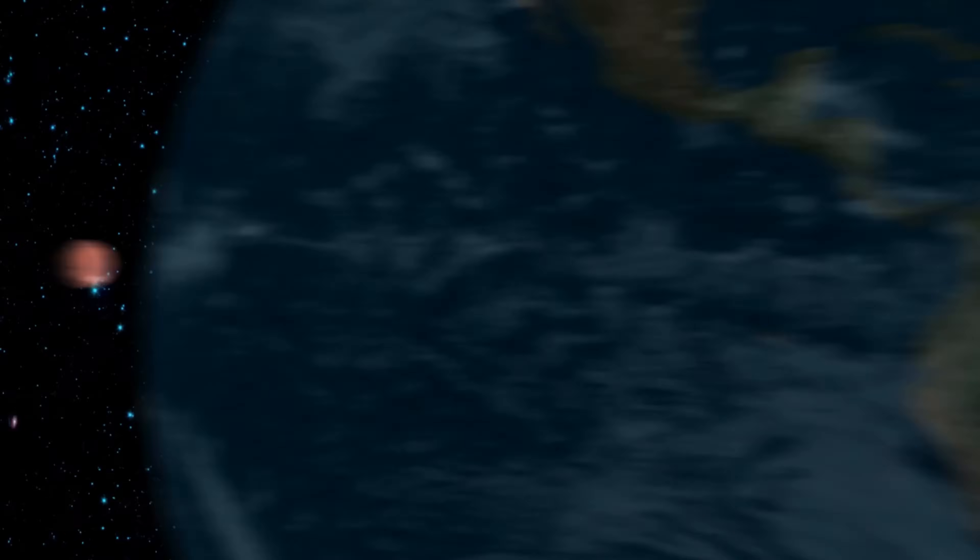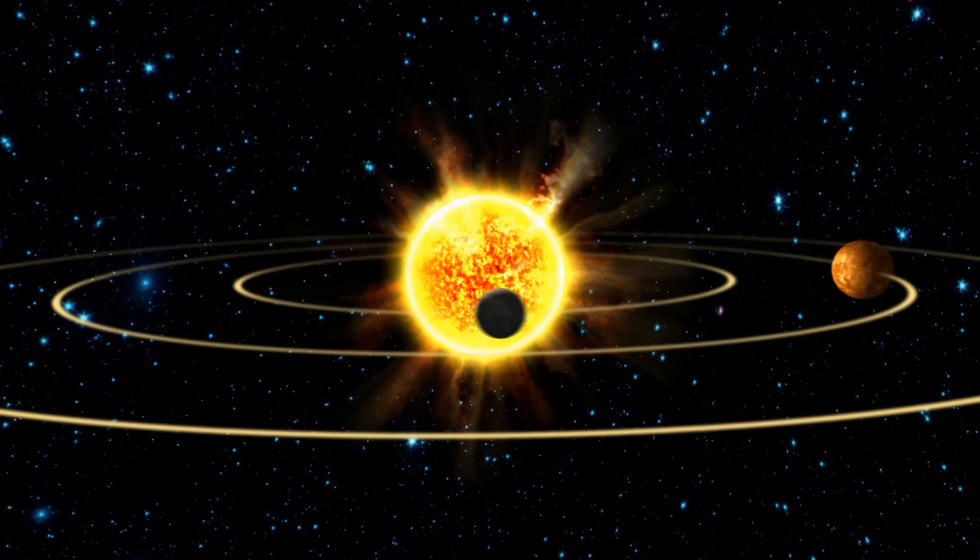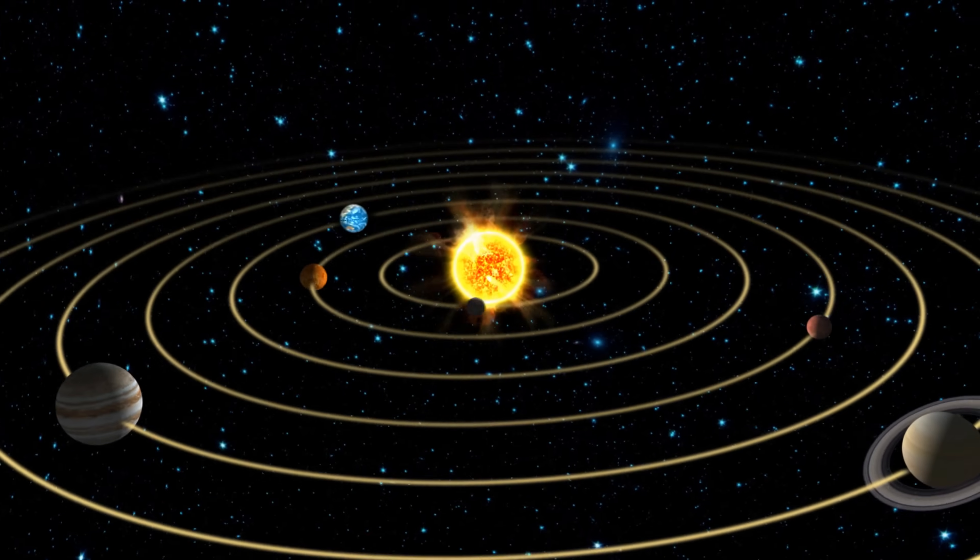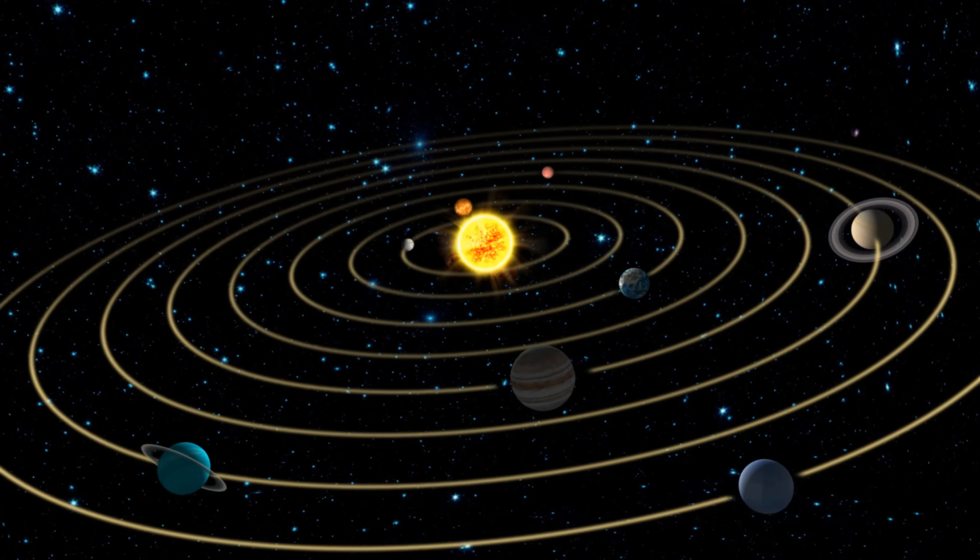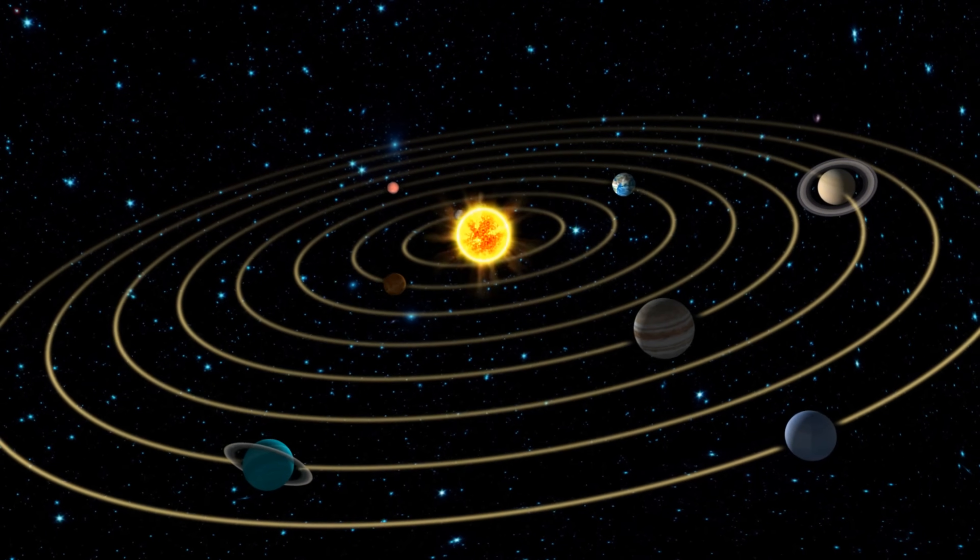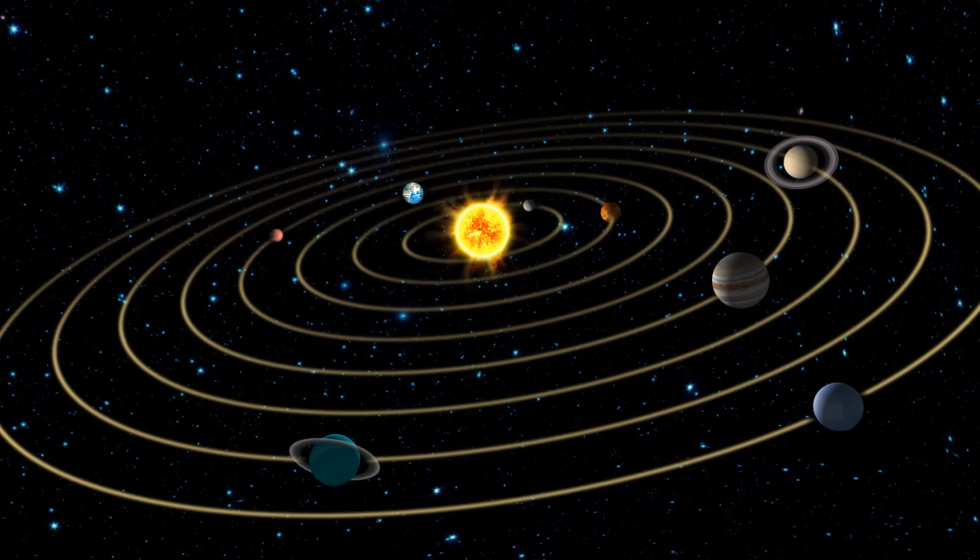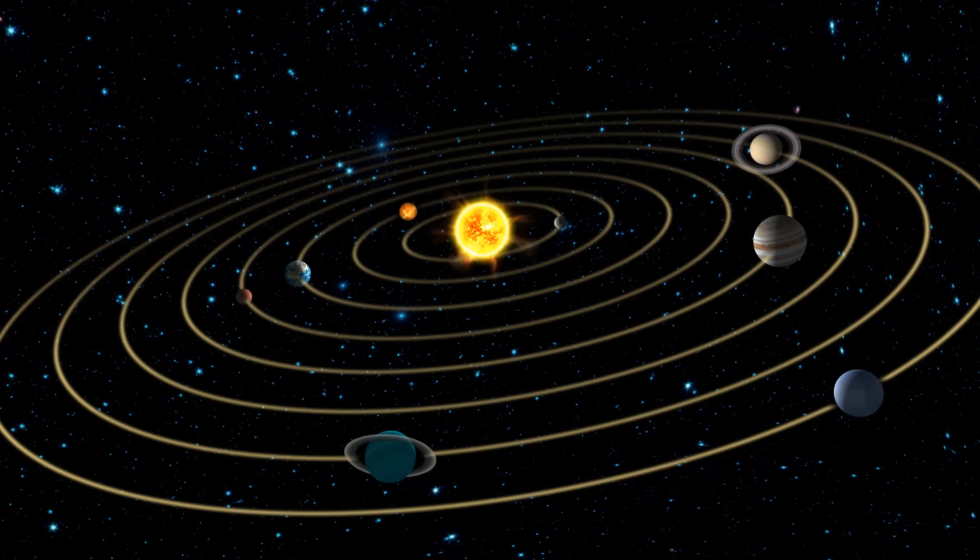You can think of our solar system as a gigantic neighborhood in space, but instead of being made up of houses or apartments like the neighborhood you might live in, our solar system is made up of the sun and the celestial bodies that orbit around it.